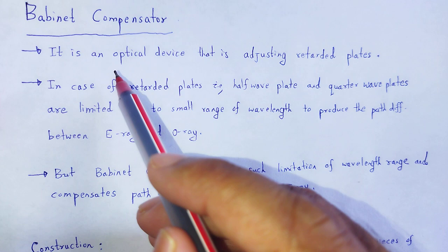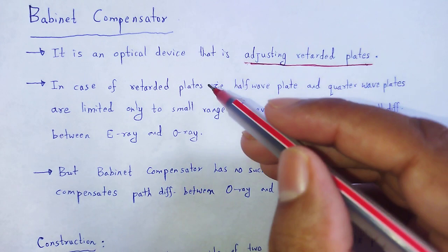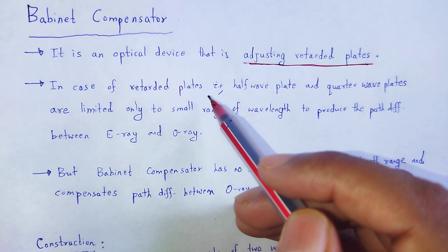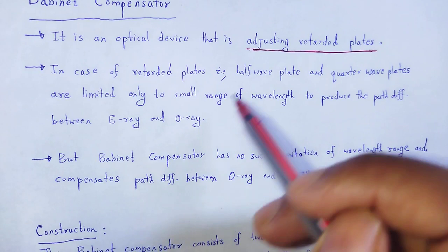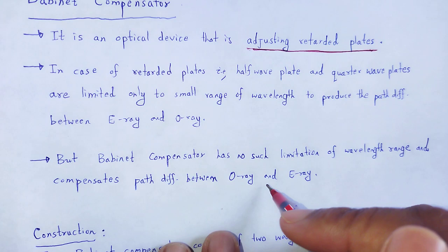The Babinet compensator is an optical device that functions as an adjusting retarder plate. In case of retarder plates we do not adjust them, but in the case of the Babinet compensator we adjust it to obtain our required result. Retarder plates — that is, half wave plates and quarter wave plates — are limited to only a small range of wavelengths to produce the path difference between E ray and O ray. But the Babinet compensator has no such limitation of wavelength range, and it compensates the path difference between the ordinary ray and the extraordinary ray.